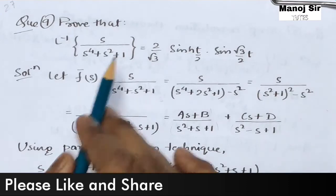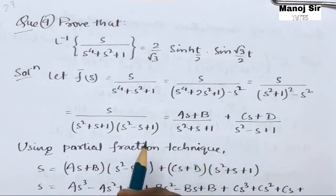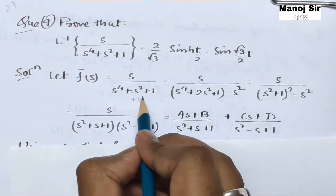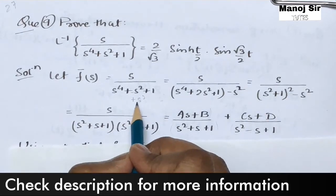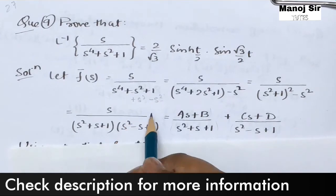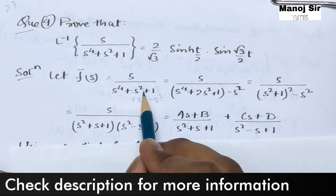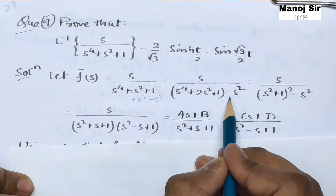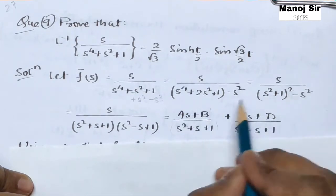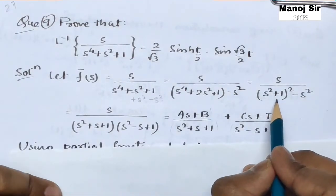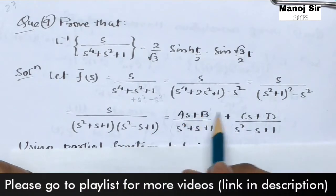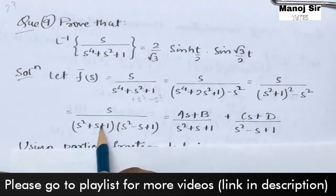We want to make the denominator a perfect square. If we add s² to s⁴ + s² + 1, we get s⁴ + 2s² + 1 = (s² + 1)². So we add and subtract s², giving s/[(s² + 1)² − s²]. This is a difference of squares (a² − b²) = (a+b)(a−b), so the denominator factors as (s² + s + 1)(s² − s + 1).